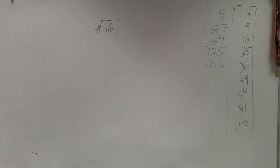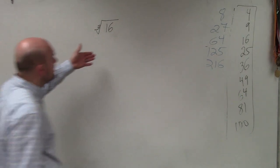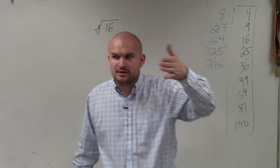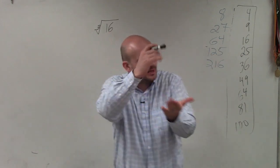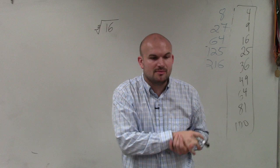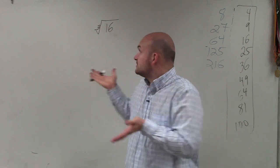All right, so in this example, ladies and gentlemen, when we're dealing with square roots, you guys are pretty familiar with square numbers. What number multiplied by itself? We know that the square root of 16 is 4.